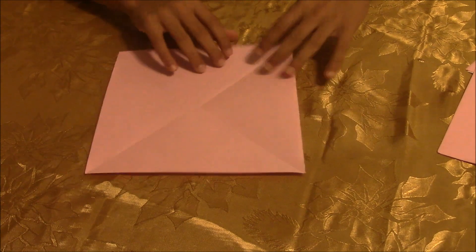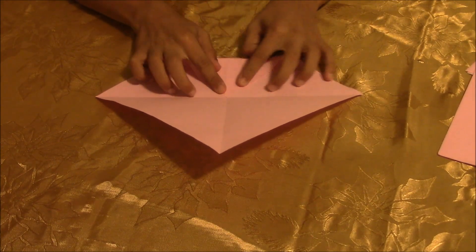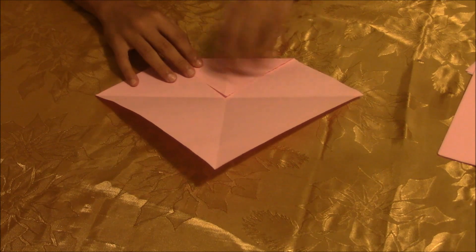So you have an X on your paper right now. So all you're going to do is get one edge of this paper and put it to the center. And crease it like that. So do it to all four sides.